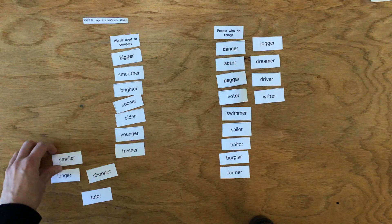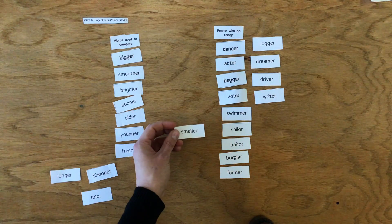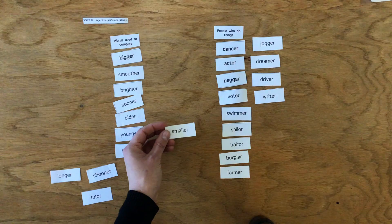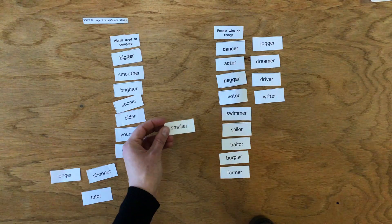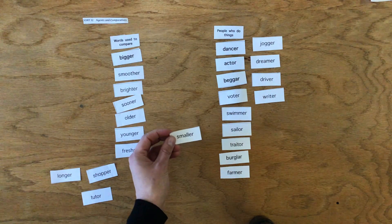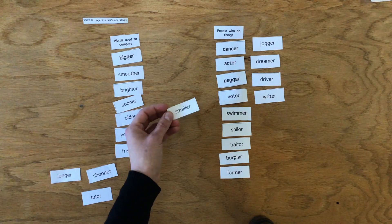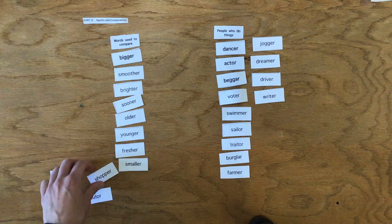Writer is somebody who writes. Smaller would be describing... it's an adjective. It's comparing something, like, my pencil is smaller than his. Put that there.